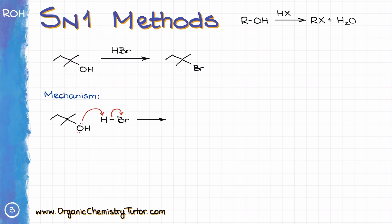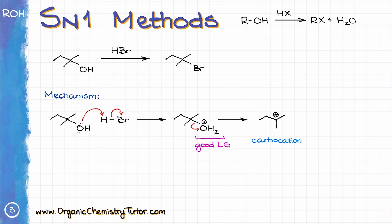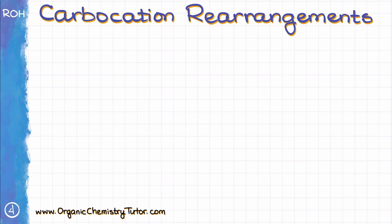Mechanistically speaking, this reaction will start with the protonation of the OH group, turning it into a good leaving group. Then, once the leaving group dissociates, we are going to make a corresponding carbocation — a tertiary carbocation in this case. Next, since we do not expect any carbocation rearrangements in this particular case, the bromide anion can attack the carbocation, giving us the final product. SN1 reactions form carbocations, and because of that, we need to be very careful with possible carbocation rearrangements.